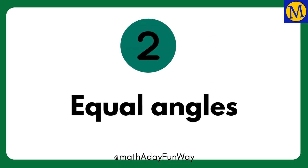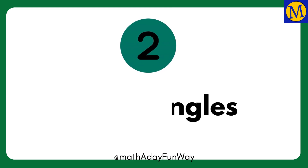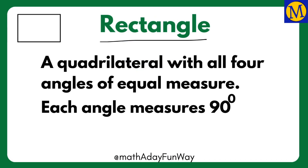The second property is equal angles. A quadrilateral with all angles of equal measure is called a rectangle. Each angle measures 90 degrees.